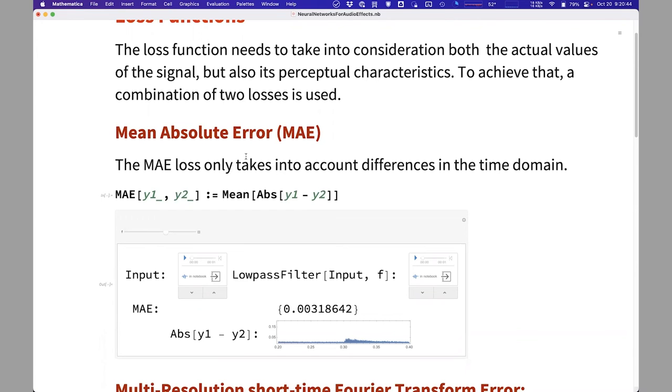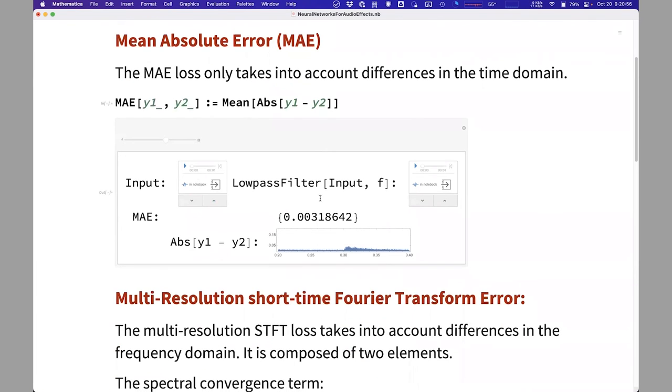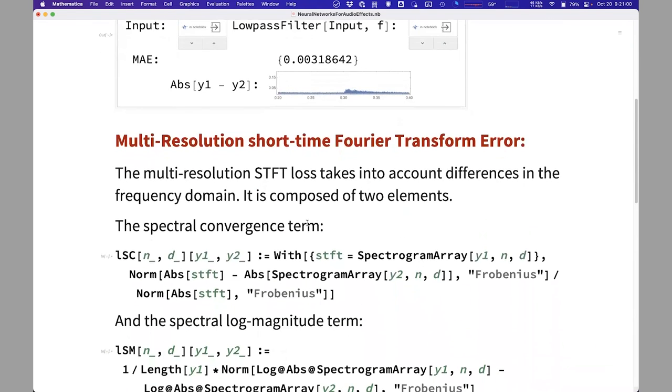We can just look at the waveform and take a mean absolute error between the two waveforms. That does not perceptually tell the whole story, though. You can have two signals that sound extremely similar, but the waveforms could be out of phase or completely different.